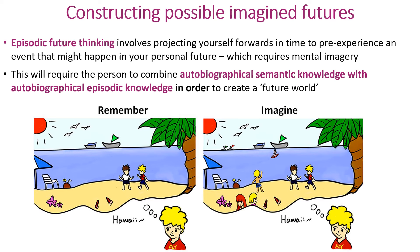Similarly with constructing an imagined future — for example, let's say you're trying to imagine yourself at schoolies at the end of the year on your favourite beach. That requires you to combine semantic knowledge such as the name of the beach and the dates when you're going to be there, along with episodic knowledge in terms of those sensory experiences you've had at that beach, like the feel of the waves crashing into your body, the warmth of the sun, the sounds, the sights. Someone with aphantasia is going to have great difficulty with this because they can't use that mental imagery process. See you next time, have a great day.